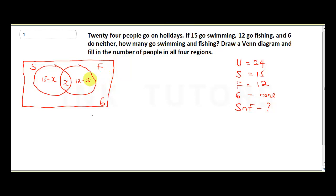So instead of writing 15 here, I'll put 15 minus X, where 15 minus X is actually the number of people that do swimming only. So fishing will now be 12 minus X. So to get the total number of people who actually do this, that will help us find our X. So this will now be total will be swimming only plus fishing only plus swimming and fishing plus none. So that will give us the total.